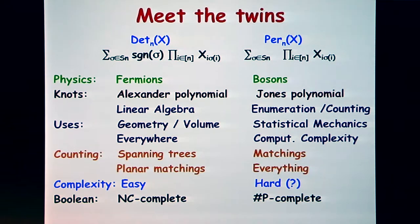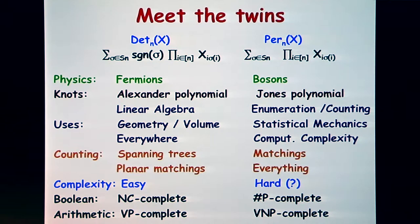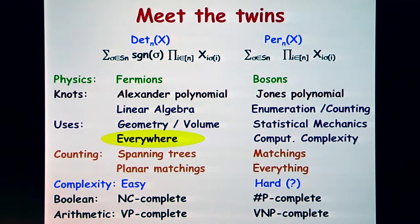For computation of these polynomials over discrete domains, the determinant is complete for a very low complexity class, while the permanent is complete for a much higher class above NP. There is also an arithmetic version of P and NP introduced by Valiant: the determinant is complete for VP (Valiant's P), and the permanent is complete for the analog of NP. These completeness results capture both of them.